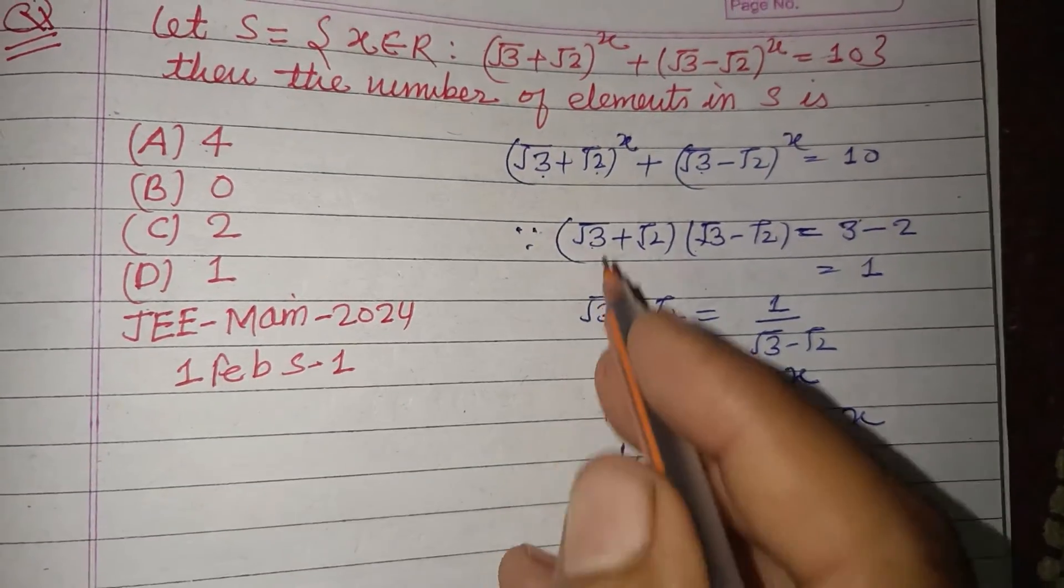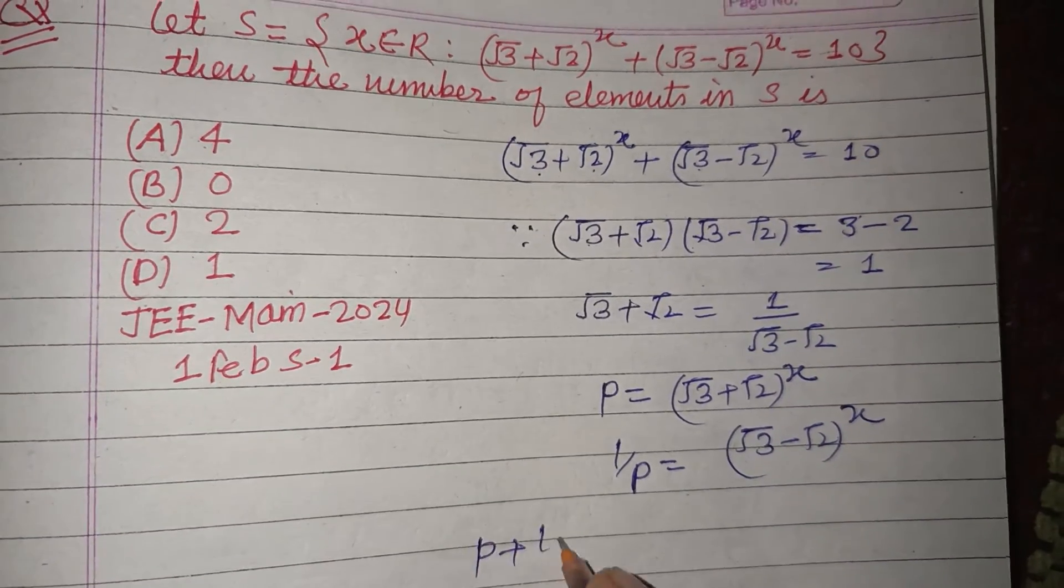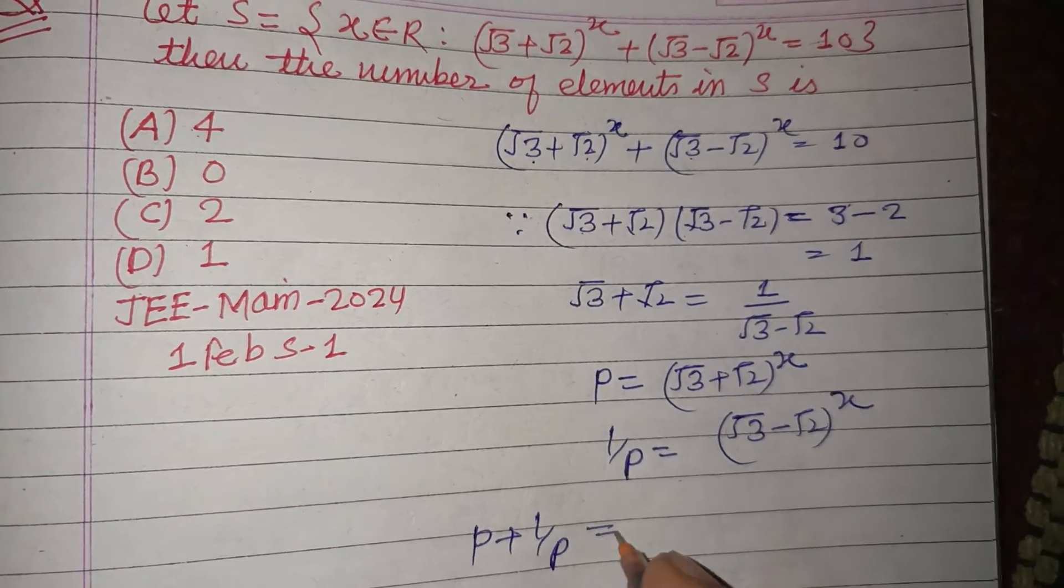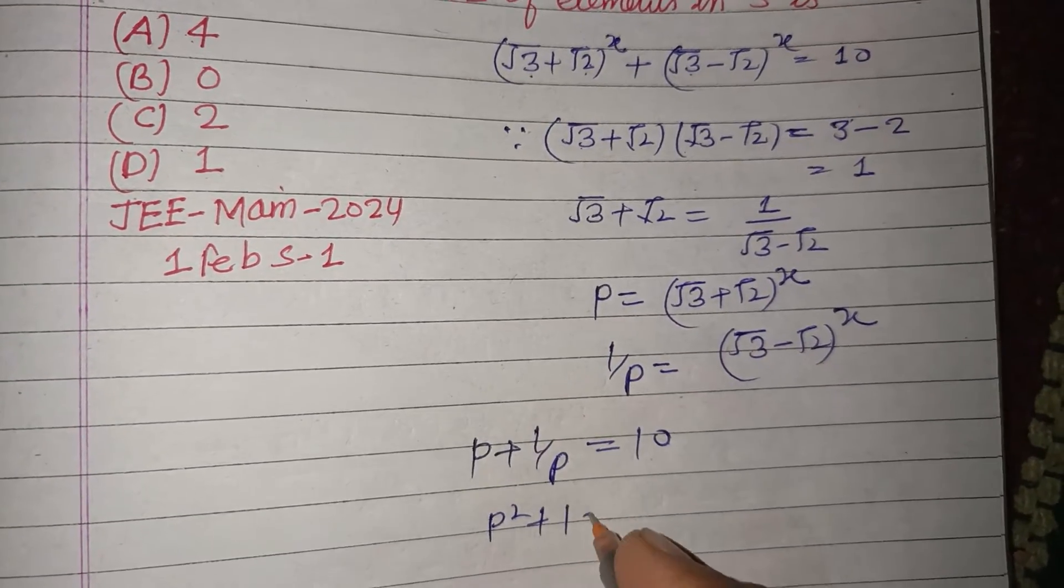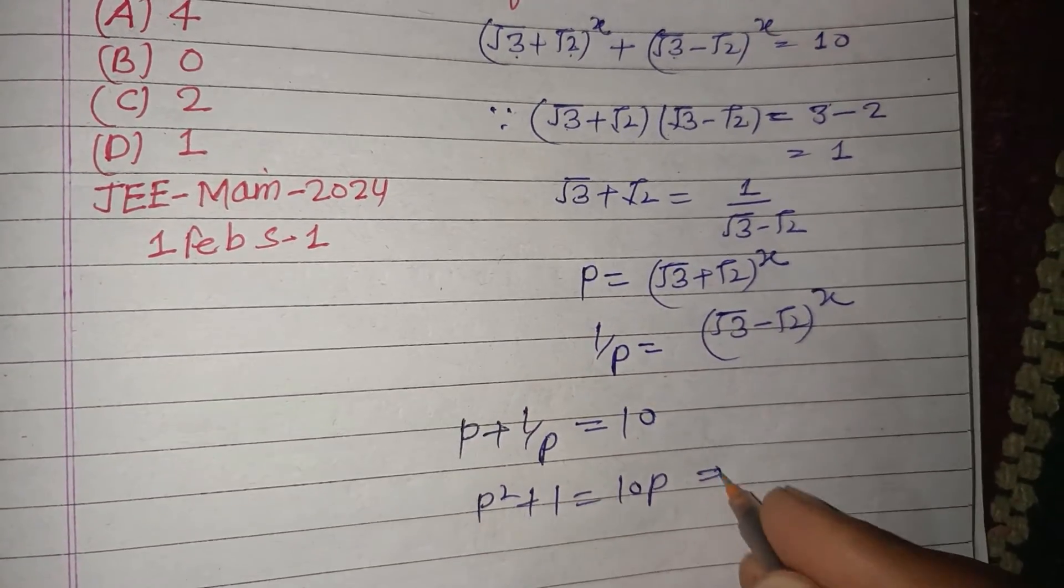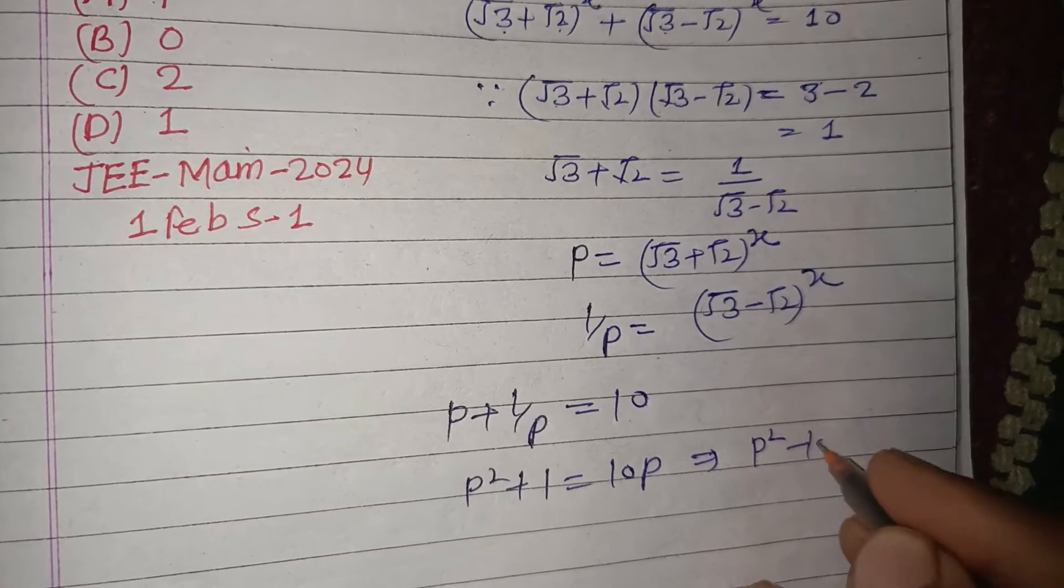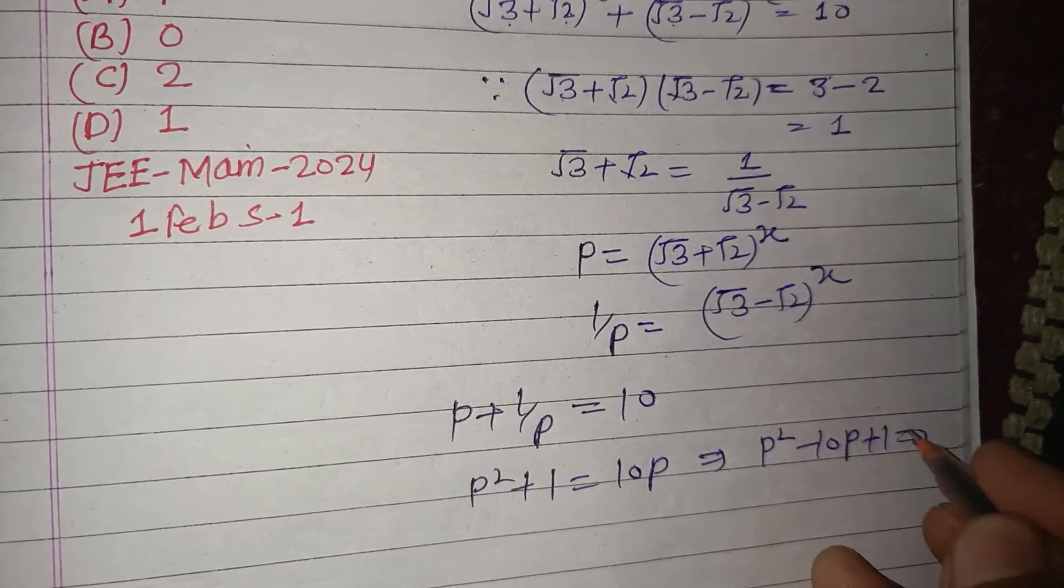Putting the values in the given equation: p + 1/p = 10, which gives p² + 1 = 10p, or p² - 10p + 1 = 0.